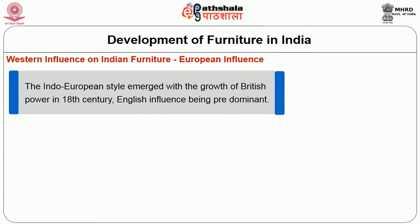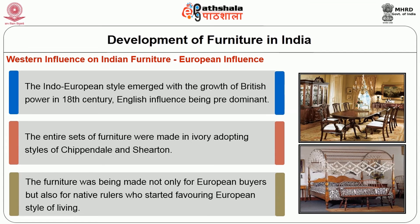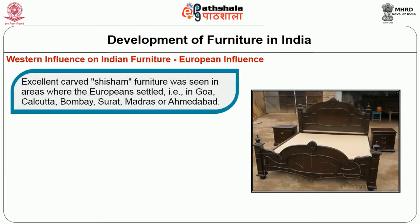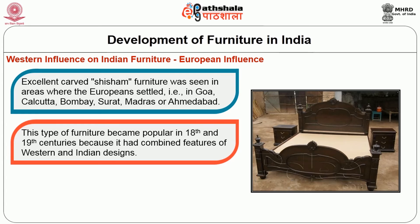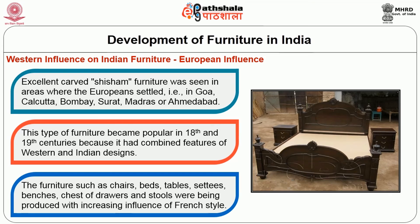The Indo-European style emerged with the growth of British power in the 18th century, with English influence being predominant. Entire sets of furniture were made in ivory, adopting styles of Chippendale and Sheraton. Furniture was being made not only for European buyers but also for native rulers who started favouring the European style of living. Excellent carved Shisham furniture was seen in areas where Europeans settled — in Goa, Kolkata, Bombay, Surat, Madras, and Ahmedabad. This type of furniture became popular in the 18th and 19th centuries because it combined features of western and Indian designs. Chairs, beds, tables, settees, benches, chests of drawers, and stools were produced with increasing influence of French style.